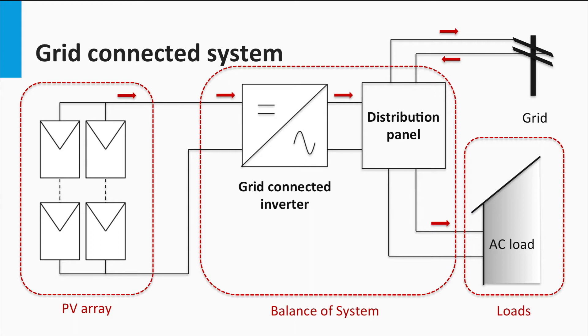The grid and the load are usually connected through a distribution panel. The interaction with the grid is two-way, while the interaction with the load is unidirectional.